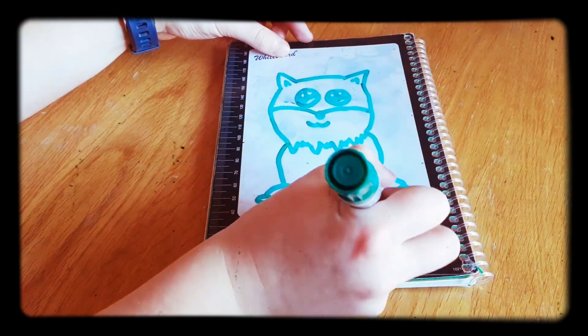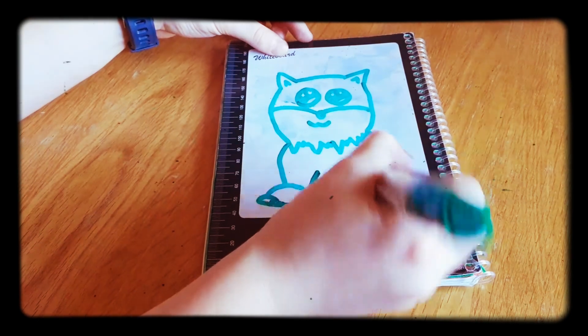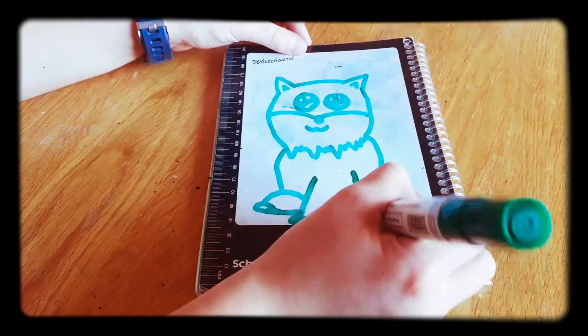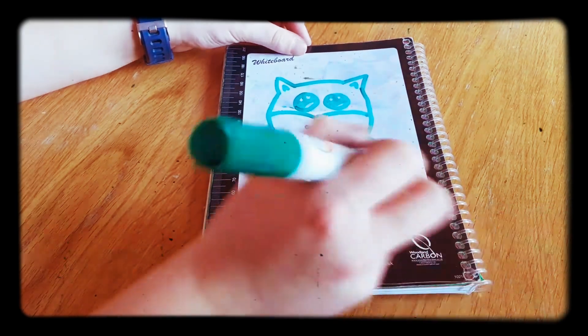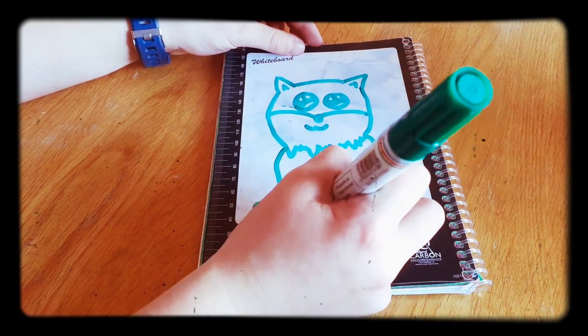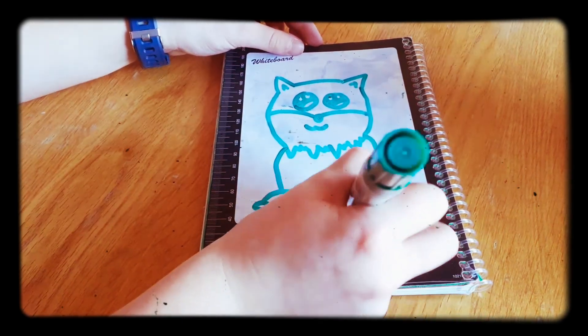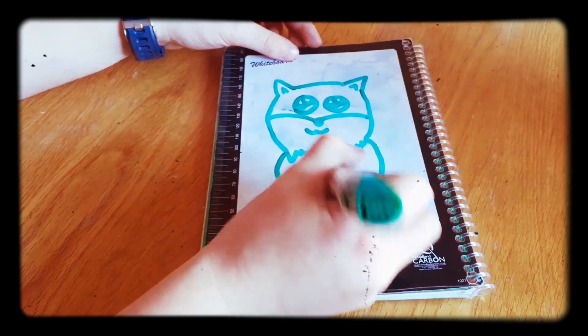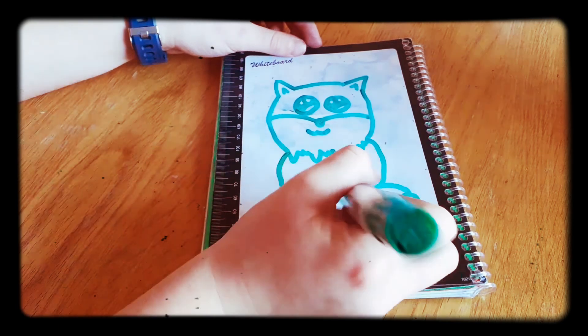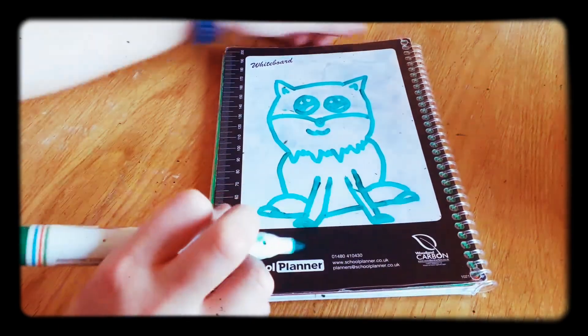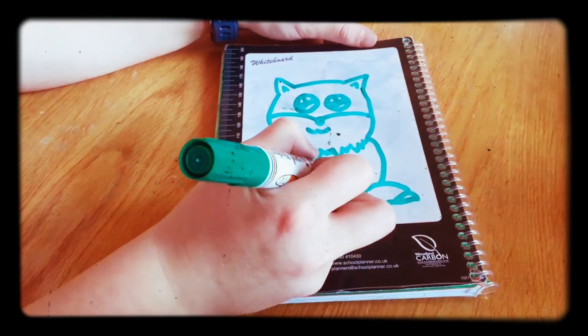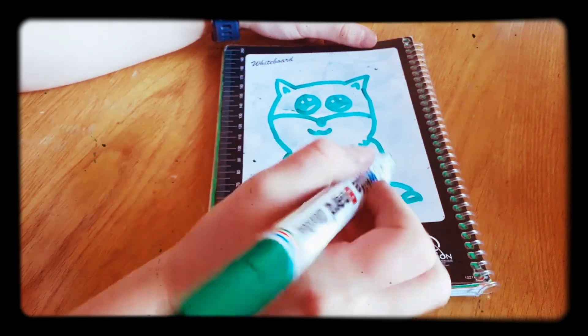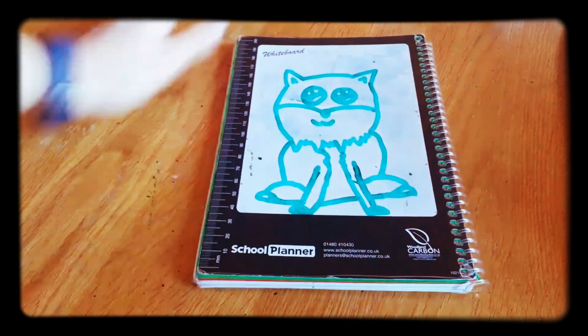Then, after you've done that, you draw the arms. So you draw lines coming down like this. Make sure it all adds up. Then, again, semicircles down at the bottom. And then you go back up with the arms. Right, like that. Then you draw that. And then you draw this shabby bit coming up here, because that's kind of like the middle bit of the fox.